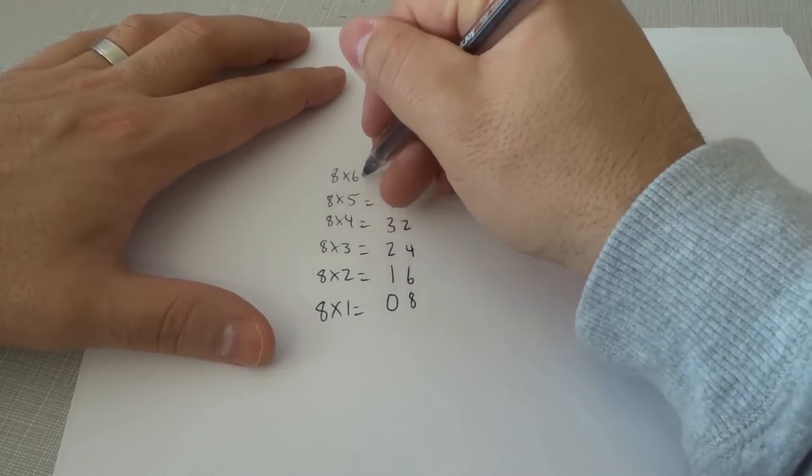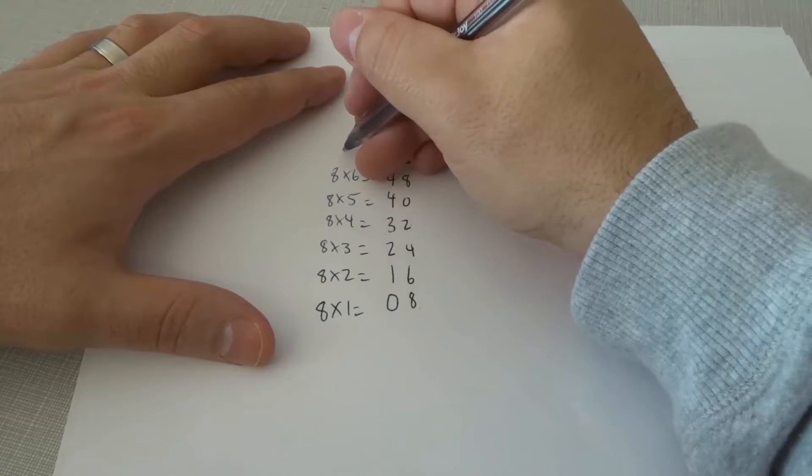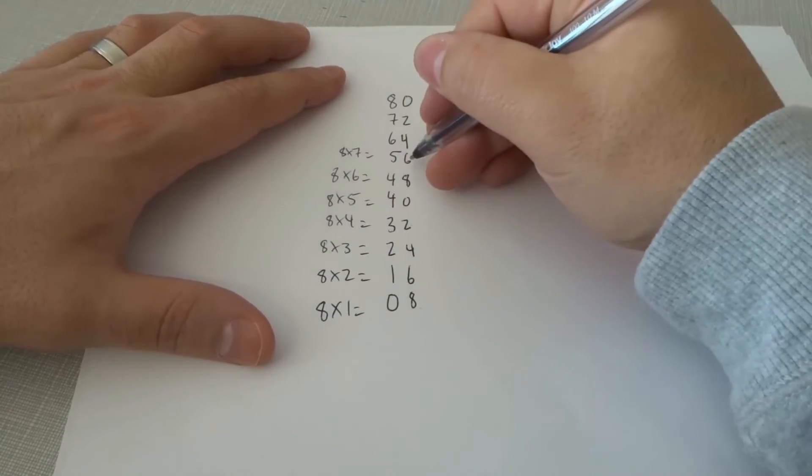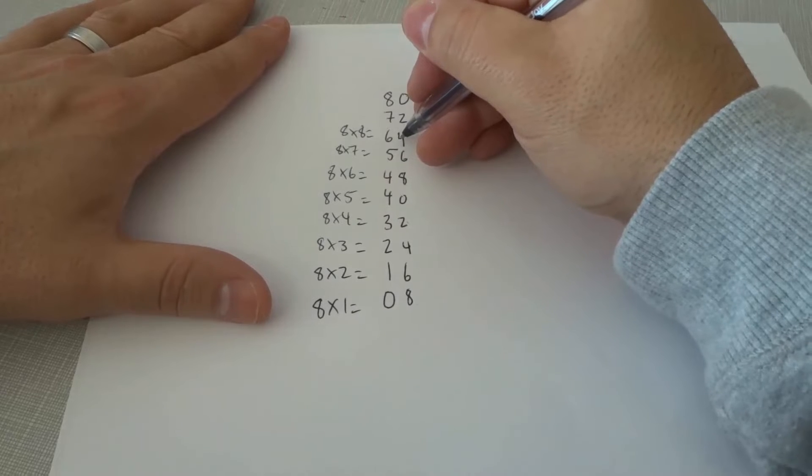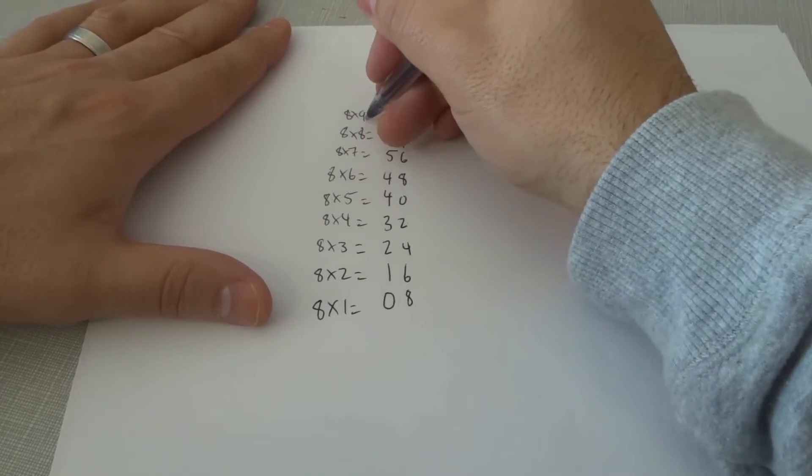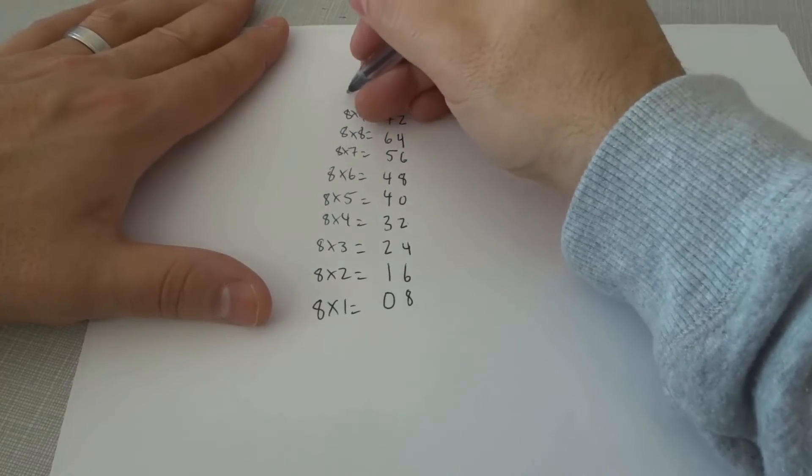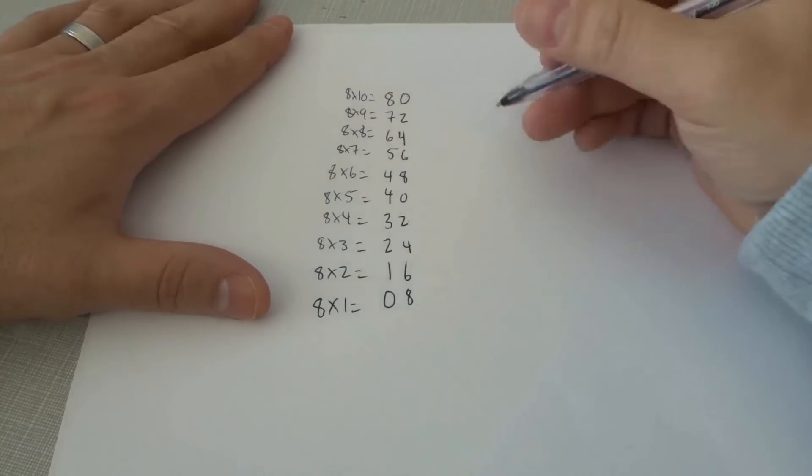8 times 6 is 48, 8 times 7 is 56, 8 times 8 is 64, 8 times 9 is 72, and then 8 times 10 is 80.